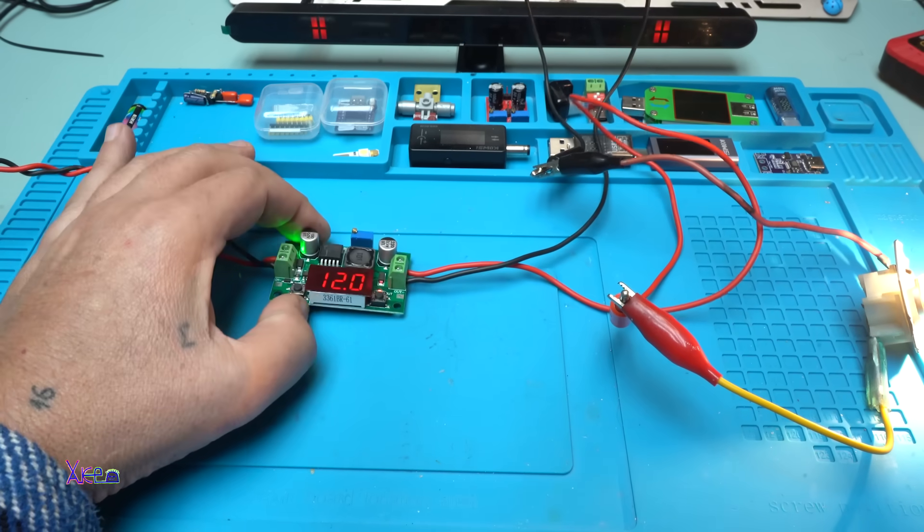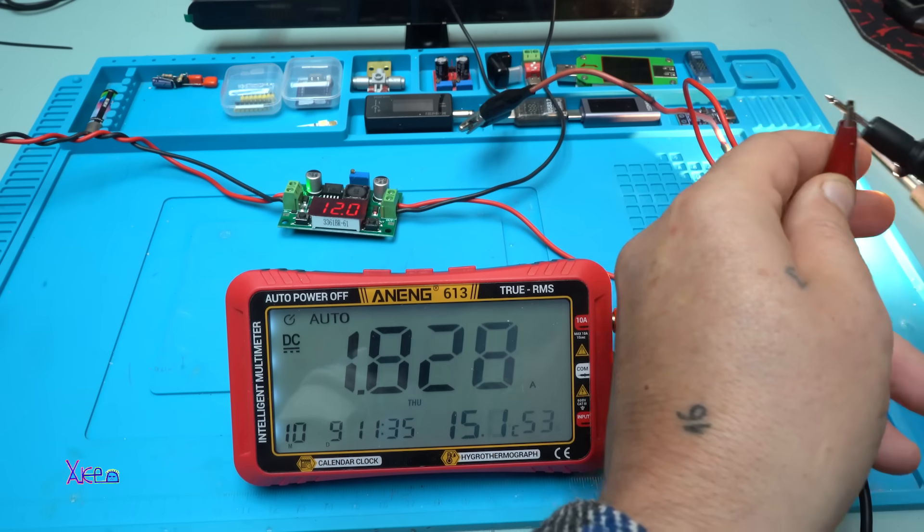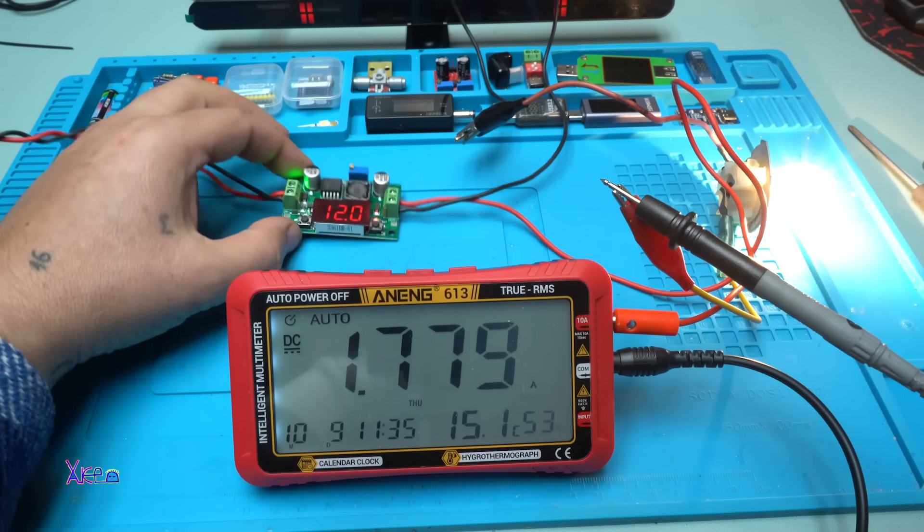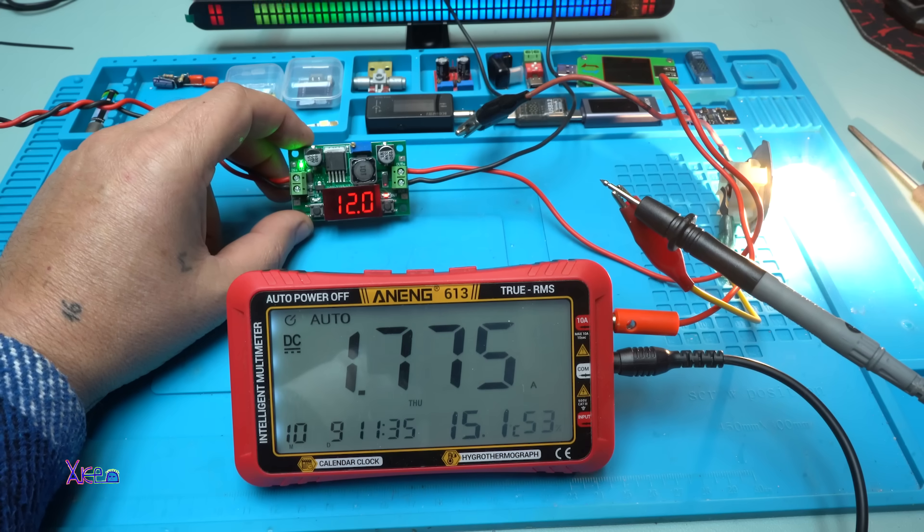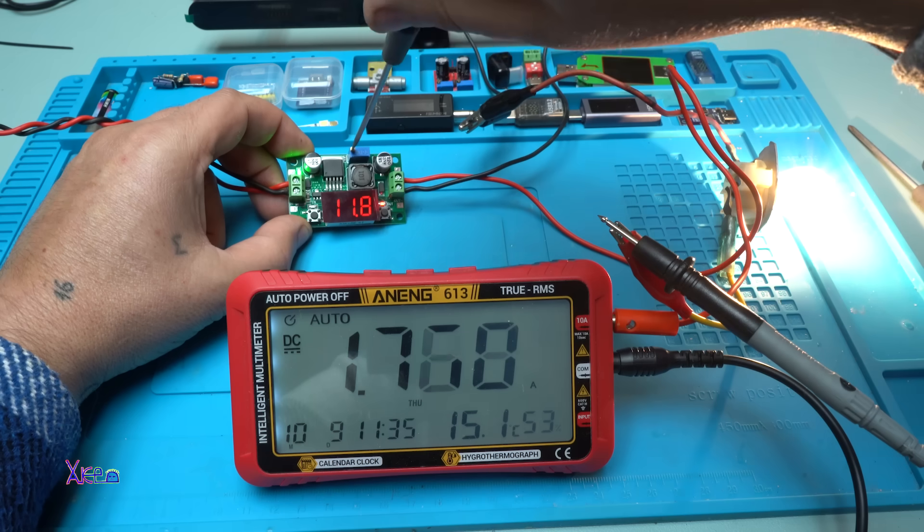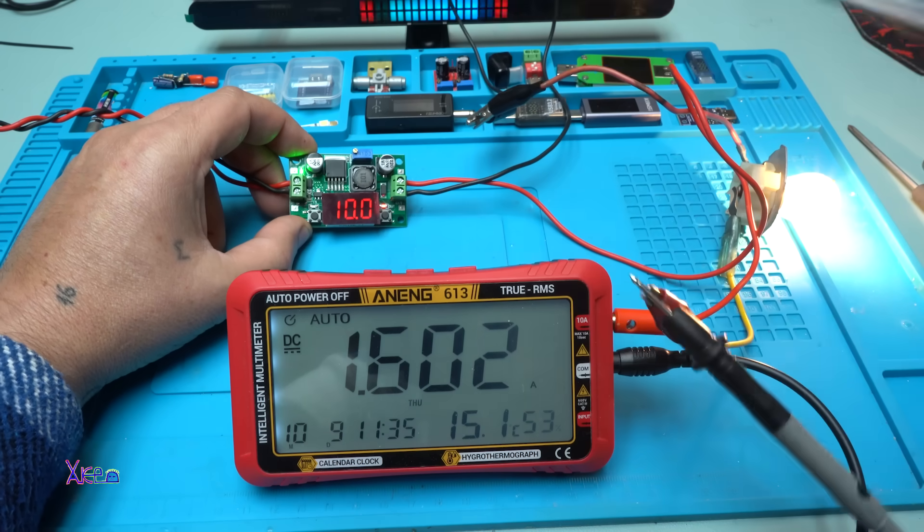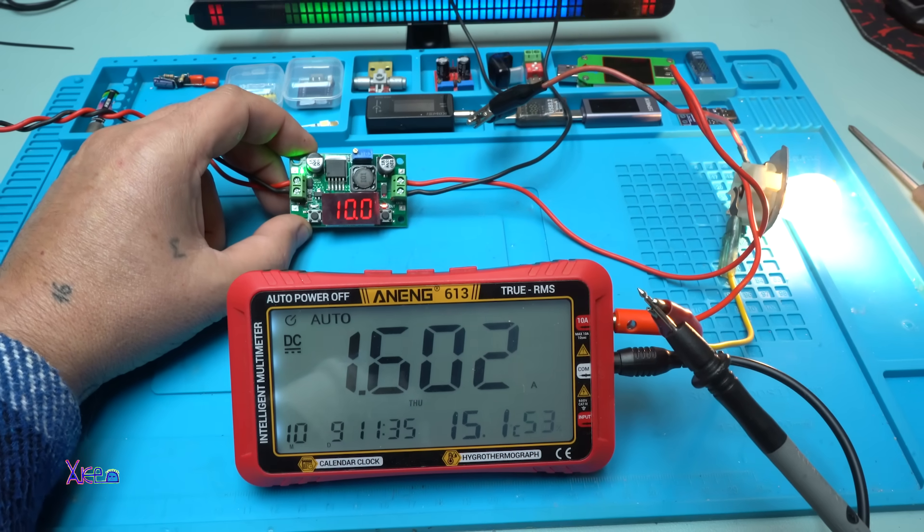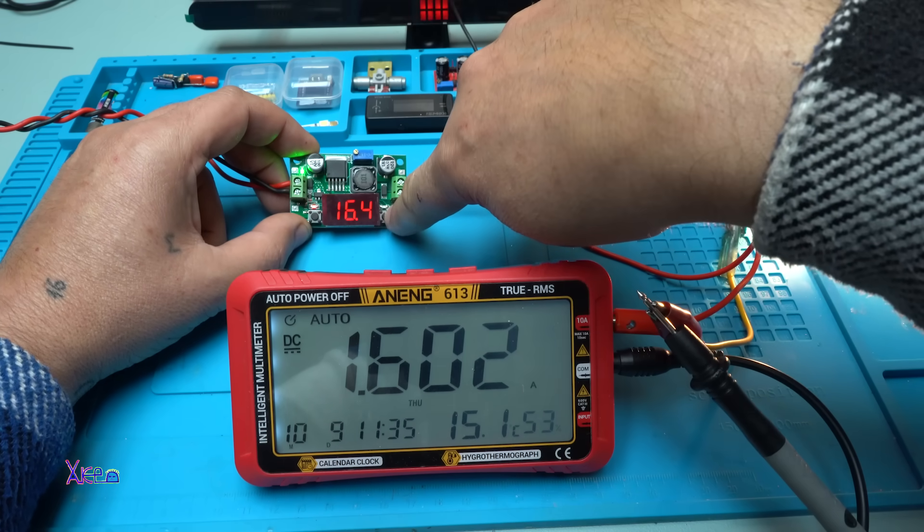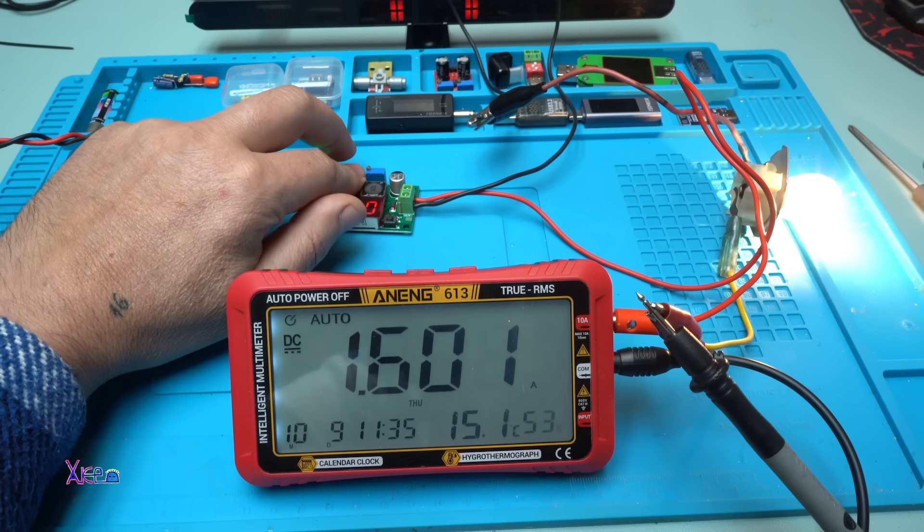Let's hook up the bulb. Take a look, it's pulling 1.78 amperes, and the voltage stays at 12 volts. At the same time, you can adjust the voltage. Take a look - works great. Beautiful. Now I have 10 volts output, the input is 16.4. Beautiful. Is it hot? Not really. Beautiful, beautiful, beautiful.